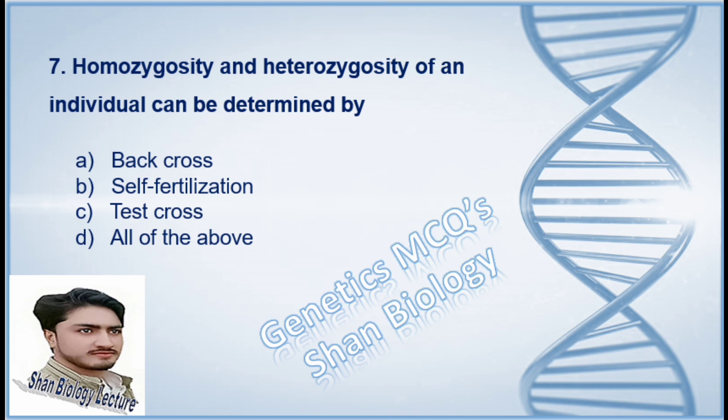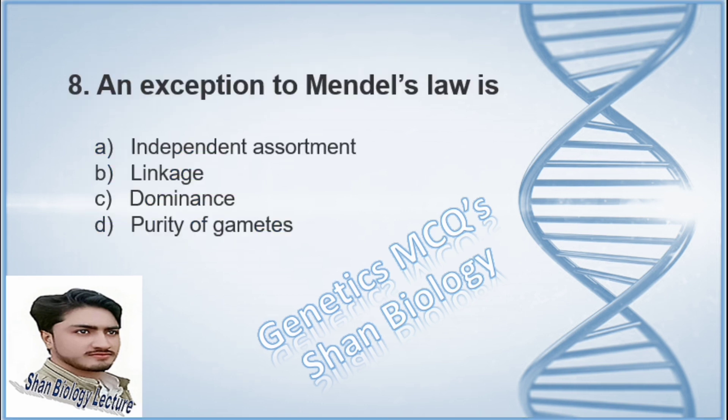Question 7: Homozygosity and heterozygosity of an individual can be determined by — option A back cross, option B self-fertilization, option C test cross, option D all of the above. The correct option is C, test cross.